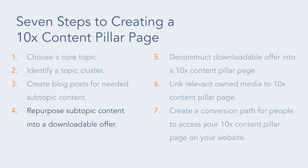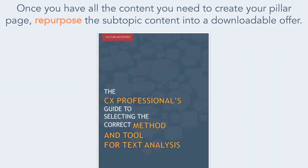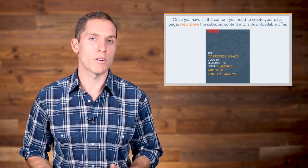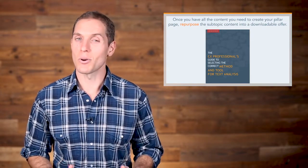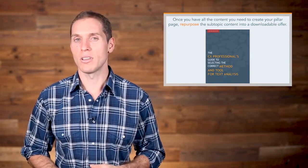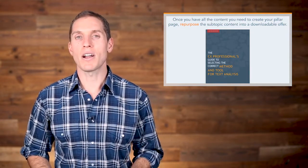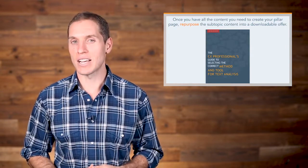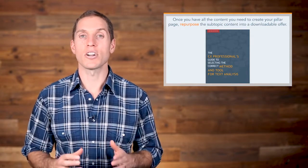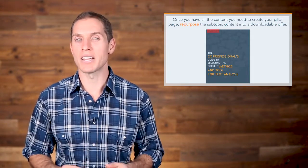Fourth, Etuma repurposed their subtopic content into a downloadable offer. Once you have all the content you need to create your pillar page, repurpose the subtopic content into a downloadable offer. Remember, the goal here is to use the content you have to put together a helpful story for the reader, which explains the core topic in depth. Create the content offer before the pillar page. This way, you'll be able to prepare a highly relevant conversion action — downloading the content offer — to have on the pillar page so your business can start generating leads as soon as the page is published.